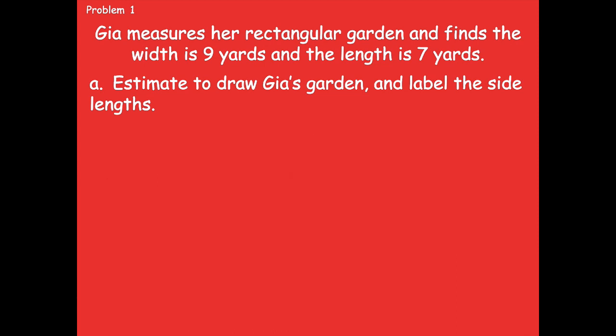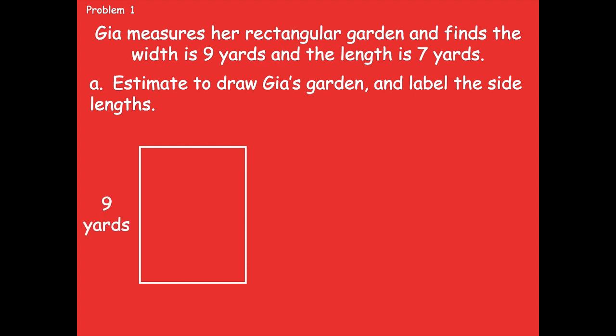All right, friends, pause if you need more time. Here's Gia's garden that I drew. Remember, it's not perfect — it's just an estimate. So it's nine yards on each side; opposite sides are equal, so I'm labeling both the right side and the left side first, and then the length is seven yards. Remember, it's telling you that it's a rectangular garden, so your shape should be a rectangle. Make sure that yours looks similar.